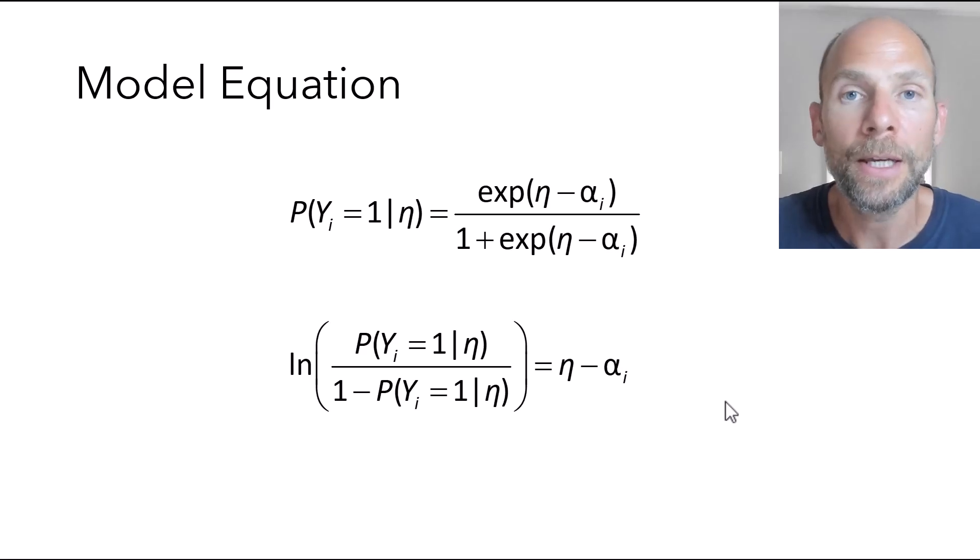Which shows you that this is still a linear model if you regard the logits instead of probability. So if you transform the probability into a logit, then you have a linear model. And that's because the logit scores are on a continuous scale, whereas probabilities are bound between 0 and 1. And so you'll sometimes find either one of these equations in the literature to describe the Rasch model.